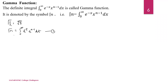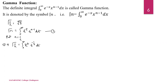Put n equal to 1/2 in equation 1. Equation 1 becomes: gamma of 1/2 is equal to the integral from 0 to infinity of e to the power minus t, times t raised to 1/2 minus 1, that is t to the power minus 1/2, dt.